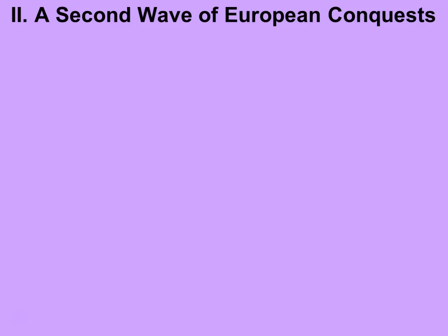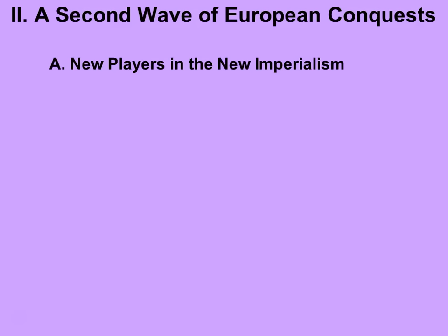Just as many historians use the phrase neocolonialism to distinguish 19th century developments from those before them, so too do many historians use the phrase new imperialism to distinguish modern maritime empires from those in the early modern period. The first wave of European maritime imperialism focused on the Americas, beginning with the Iberians and followed by the English, French, and Dutch. In the second wave, new European nations like Germany, Belgium, and Italy, and non-European nations like the United States and Japan joined the competition to annex lands in Asia, Africa, and Oceania.